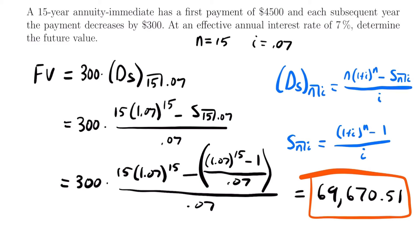That is the future value of this 15-year annuity immediate with an arithmetic decreasing progression where each payment decreases by $300 and we started with a $4,500 payment. As a quick side note: this is a complex calculation to plug into your calculator, so I recommend breaking it up into separate pieces — do one thing at a time. If you're using a financial calculator, there is an easier way, but I'll leave that for a future video focused entirely on how to use the financial calculator.